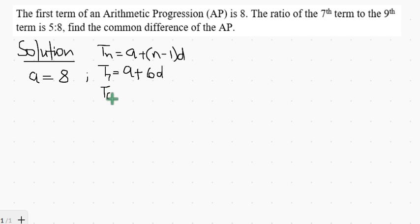Going forward, from the question, the ratio of the seventh term to the ninth term is equal to 5 ratio 8. This implies that T7, which is a plus 6d, divided by a plus 8d is equal to 5 over 8.